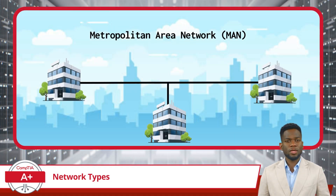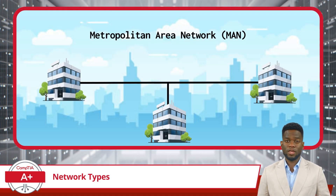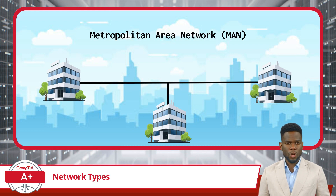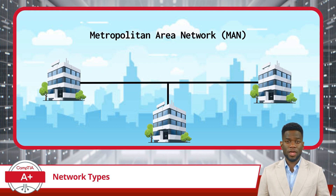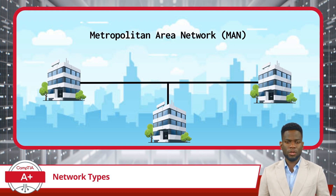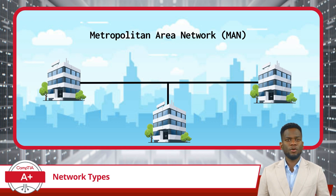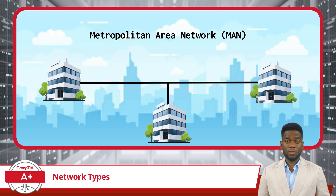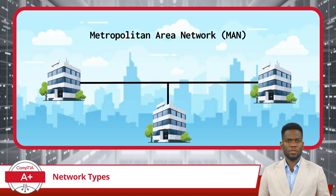Metropolitan Area Networks, or MANs, cover an area larger than a LAN but smaller than a WAN, typically spanning a city or a metropolitan area. They are used to connect multiple LANs within a geographical area, allowing organizations and buildings to share resources at high speeds.